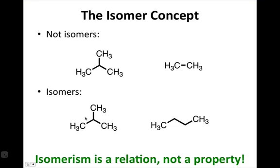One important point to note is that isomerism is a relation, not a property. It's a relationship between two molecules. So it makes no sense to say this molecule is an isomer in and of itself. One molecule is always an isomer of another molecule. We'll see that again and again for all kinds of isomers. What you should keep in mind is that it's always a relation between two objects and not a property of one individual object.